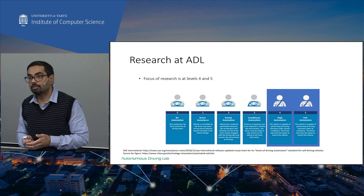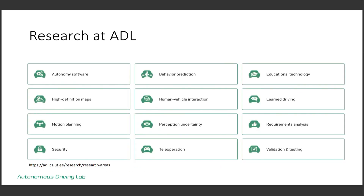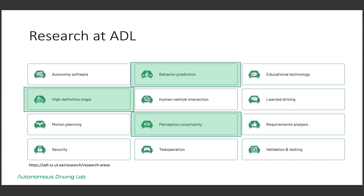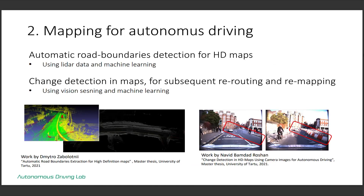At the research level, our focus is on levels four and five. One of the biggest benefits of being in academia is you can look at the future without the compulsion to commercialize tomorrow. We have published work on giving way to other priority vehicles at roundabouts, intersections, and T-junctions. There's also work on change detection in maps — an environment evolves over time, so how do you detect it needs remapping for an autonomous vehicle?